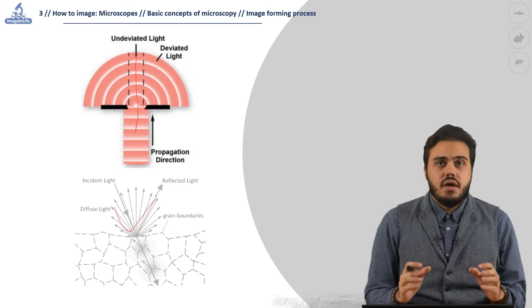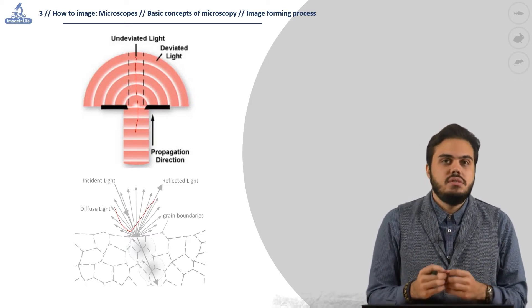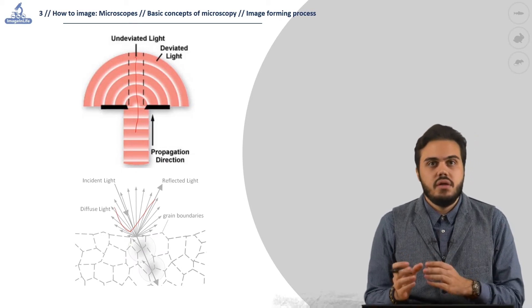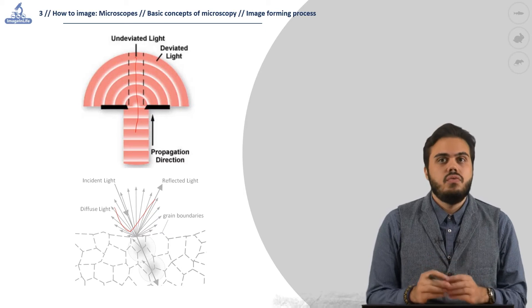The diffracted light, depending on the nature of the specimen and light wavelength, is different and diffracted at different angles. Both components are then used to form the final image.